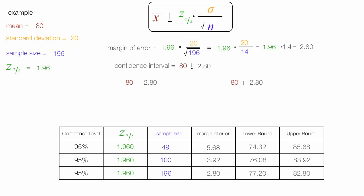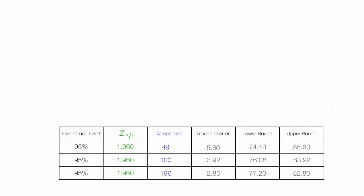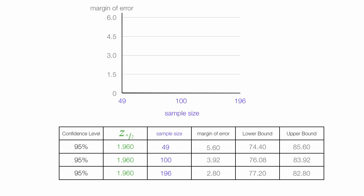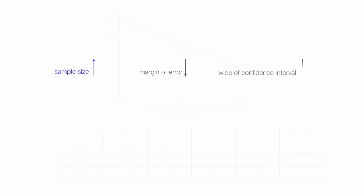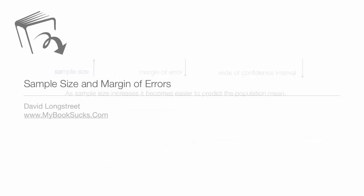Now I'm going to graph these points. If I plot margin of error along the y-axis and sample size along the x-axis, I see that as sample size increases, margin of error goes down. As I plot the points, you'll see that as sample size increases the margin of error begins to fall, and the width of the confidence interval goes down too. As sample size increases, it becomes easier to predict the population mean. That's the overall conclusion.